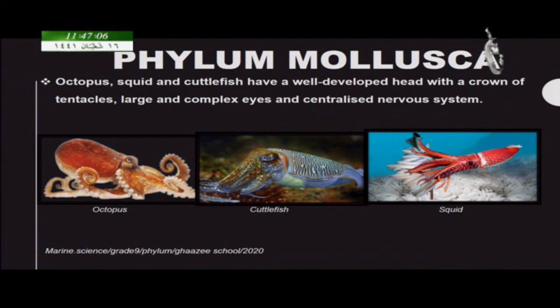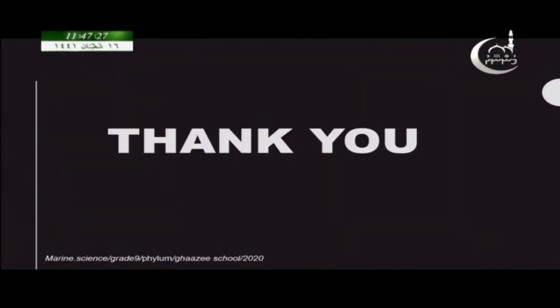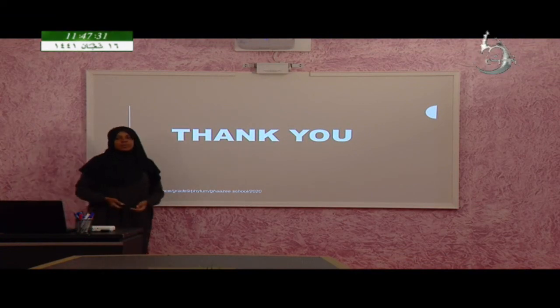Molluscs also have a very soft body but have a head with a crown of tentacles, and they have very large and complex eyes — usually the largest eyes among marine organisms. That's all for today, and tomorrow in the next class we will be continuing the phylums.